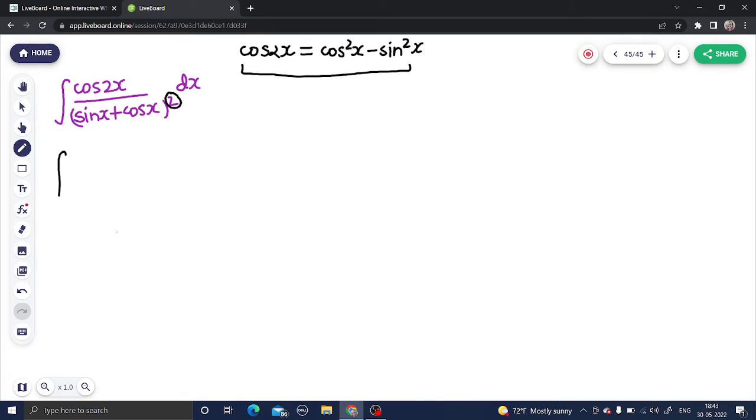So what I will do is first of all I will replace this cos 2x by cos square x minus sine square x divided by...